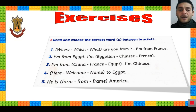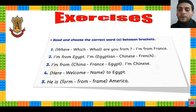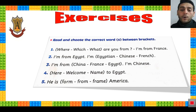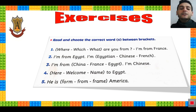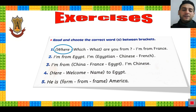Let's answer some exercises. Read and choose the correct words between brackets. Number 1: Where / which / what are you from? We ask about places using 'where.' Excellent. Where are you from? I am from France.